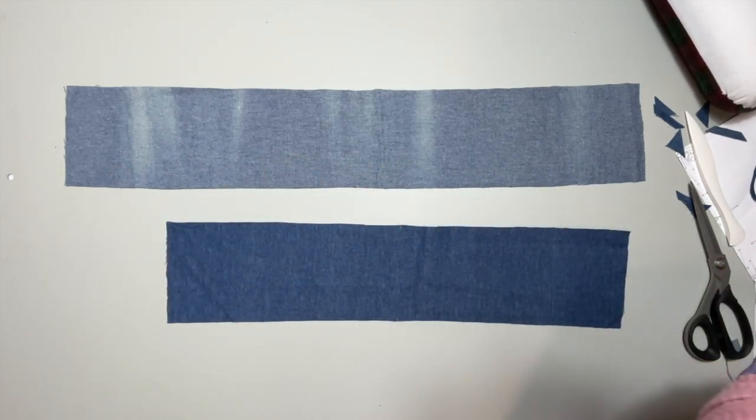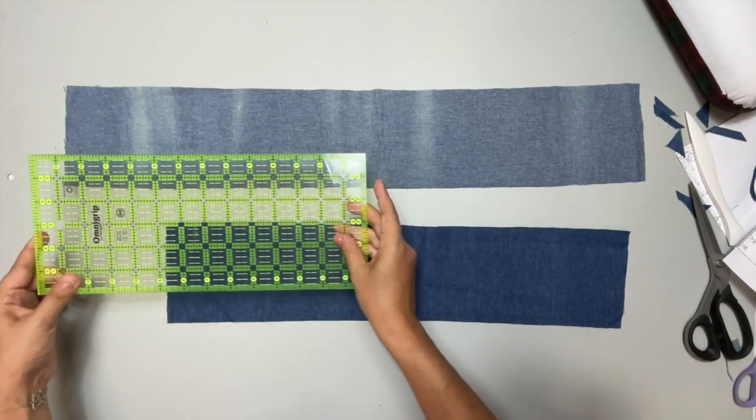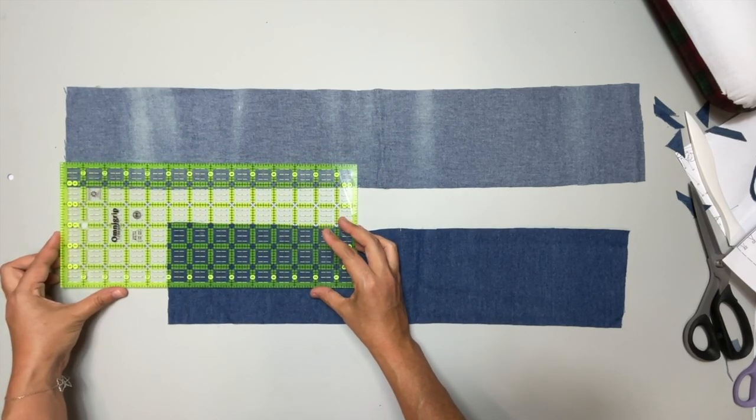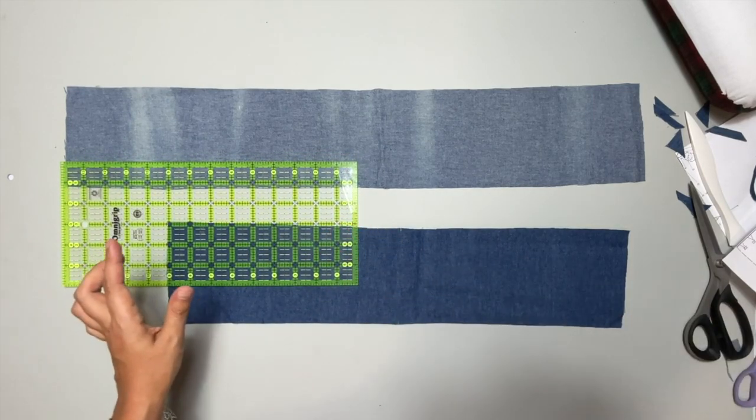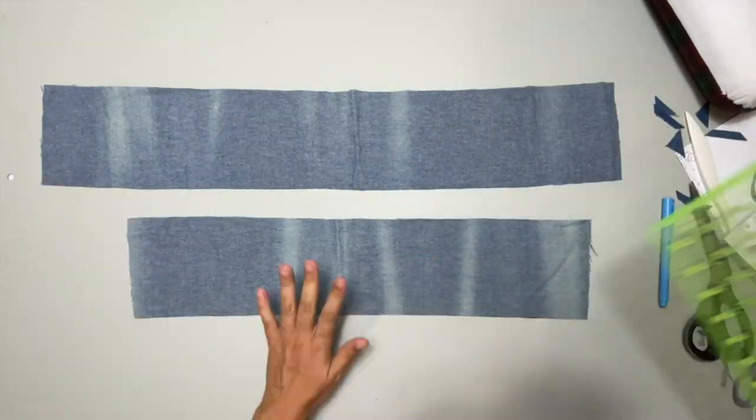So find the one that has only the one notch and press that up by 5/8ths. Again, doing the little hem trick of measuring up by 1 1/4 and then folding up to that line.